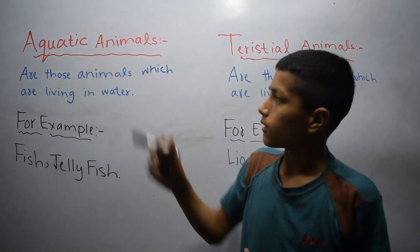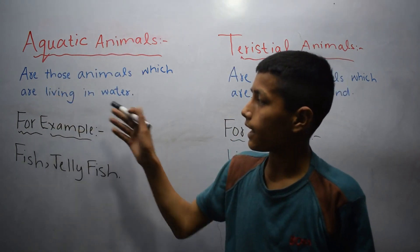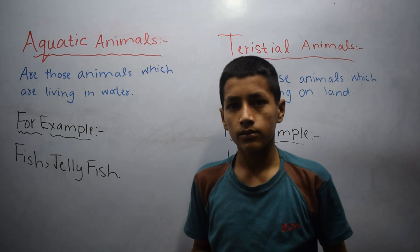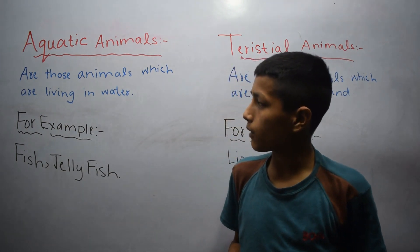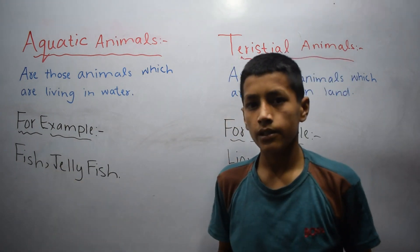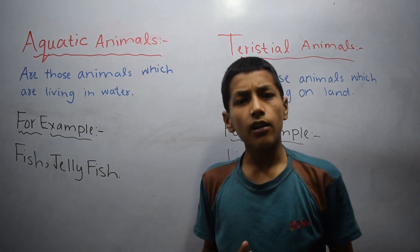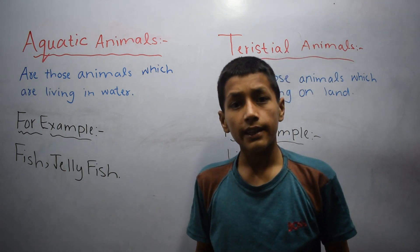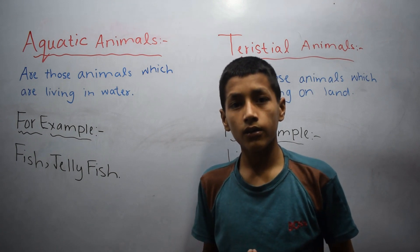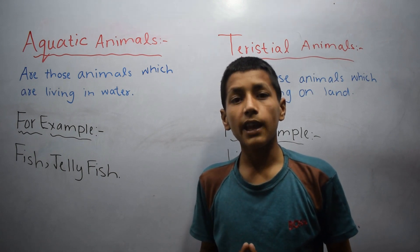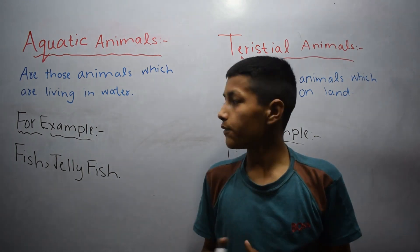Aquatic animals are those animals which are living in water. For example, fish. Fish can live in water. They can reproduce, they can grow, and they find shelter and also survive there.